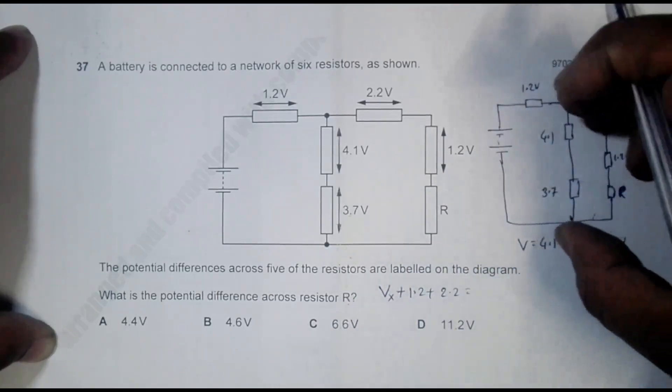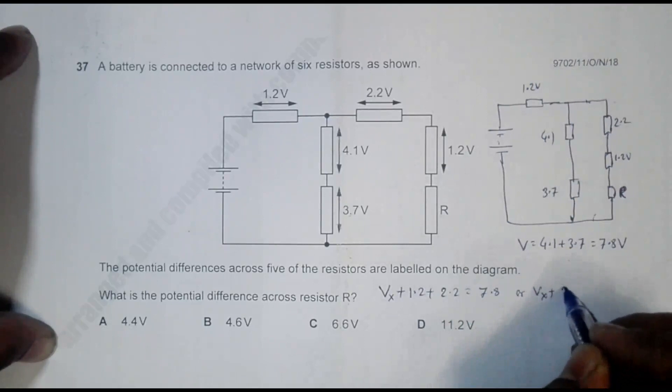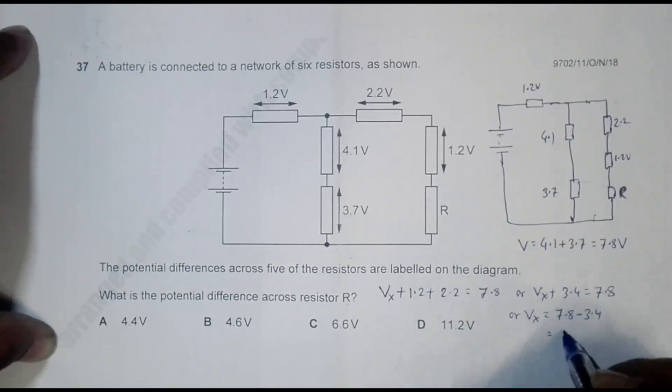So that means Vx plus this 3.4 should be equal to 7.8, which means Vx is equal to 7.8 minus 3.4, and that's equal to 4.4 volt.